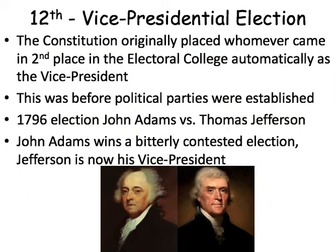The 12th Amendment deals with the direct election of a vice president and further defines how a presidential election goes. Initially in the Constitution, whoever came in second place in the Electoral College election was automatically the vice president. If the president dies, we want whoever came in second to be the president — they were the second choice of the Electoral College and the people. On paper, it sounds great, but this is all before the political party system of the United States evolved and was established during Washington's presidency.